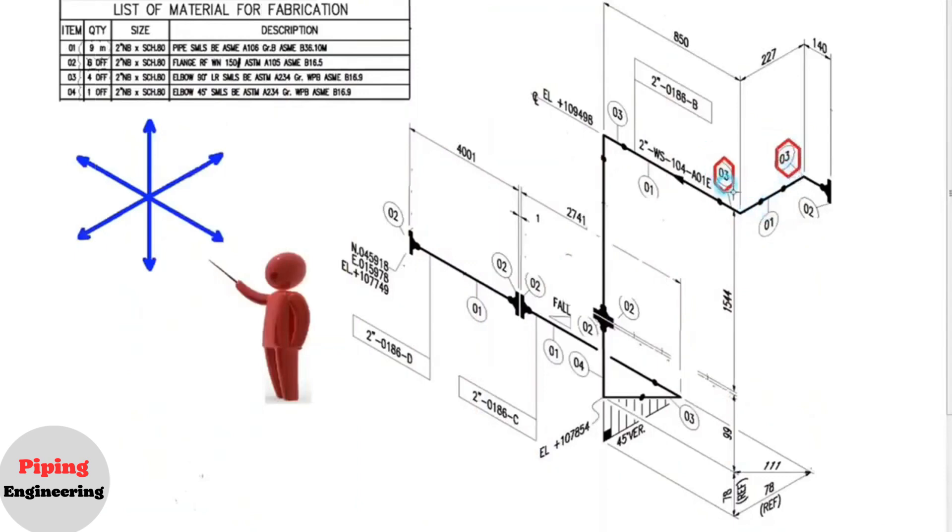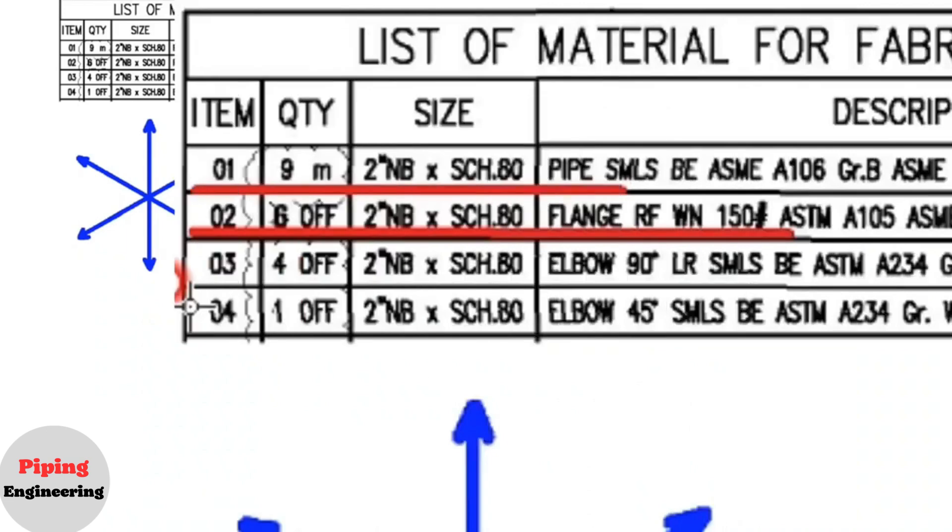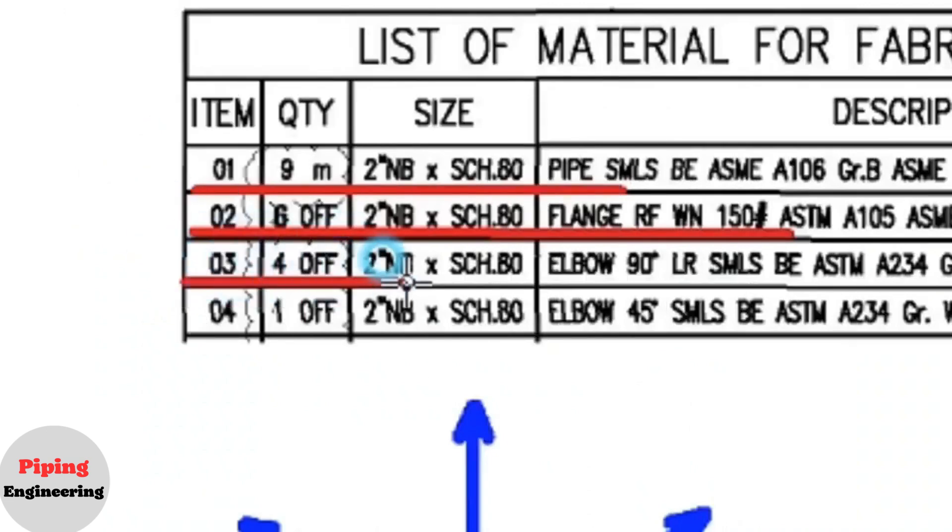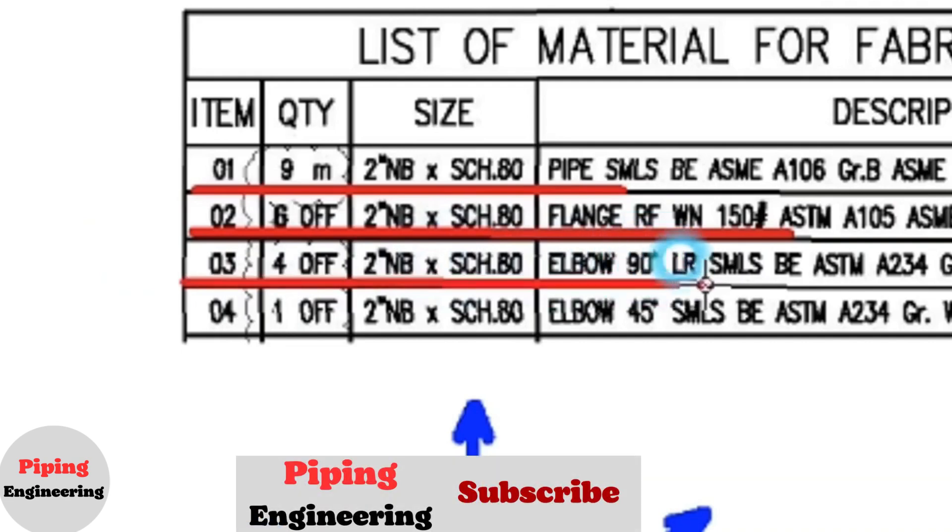These are details number 3. Let's look at the material list. Detail number 3: 4 pieces, 2 inch, schedule 80 elbow, 90 degree, long radius.